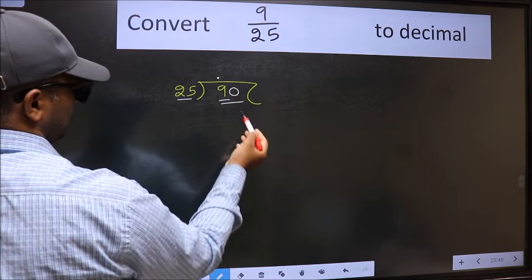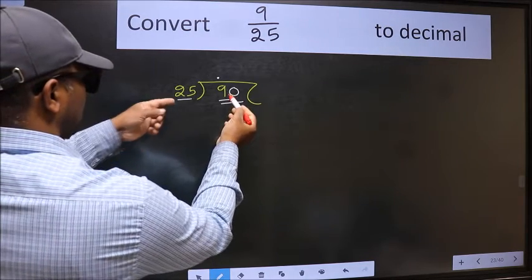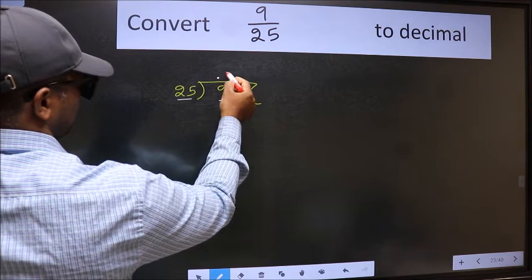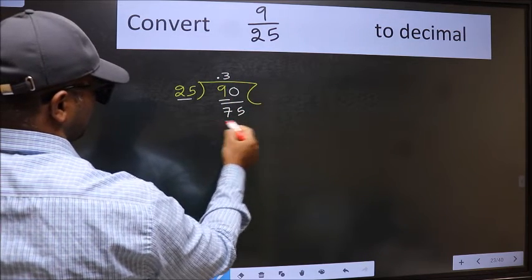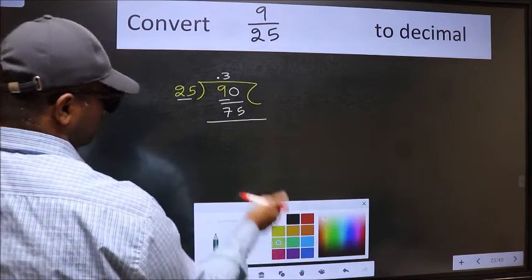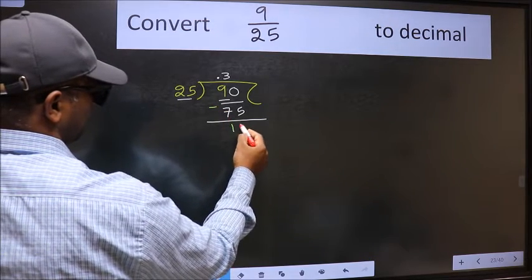So, 90. A number close to 90 in 25 table is 25 times 3, 75. Now, we should subtract. We get 15.